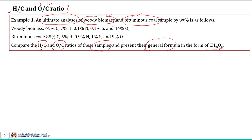As per the statement of the example, an ultimate analysis of wood biomass and bituminous coal by weight percent is given. Wood biomass contains approximately 49% carbon, 7% hydrogen, 0.1% nitrogen, 0.1% sulfur, and 44% oxygen. Bituminous coal contains around 85% carbon, 5% hydrogen, 0.9% nitrogen, 1% sulfur, and 9% oxygen by weight. We will estimate the H/C and O/C ratios and represent their general formula in CHO form.